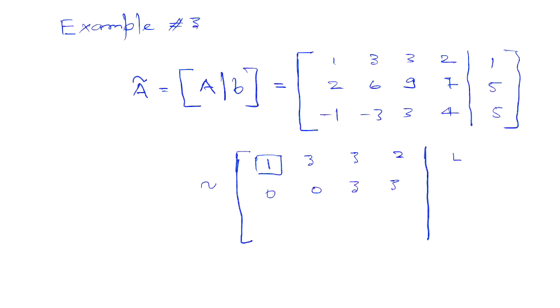So in the first row, we found the pivot in the first column. We use that to reduce the matrix further, and we reduce the second and third row of the matrix in the first step.